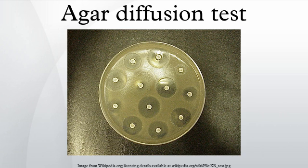Kirby-Bauer Antibiotic Testing is a test which uses antibiotic impregnated wafers to test whether bacteria are affected by antibiotics. In this test, wafers containing antibiotics are placed on an agar plate where bacteria have been placed, and the plate is left to incubate. If an antibiotic stops the bacteria from growing or kills the bacteria, there will be an area around the wafer where the bacteria have not grown enough to be visible. This is called a zone of inhibition.